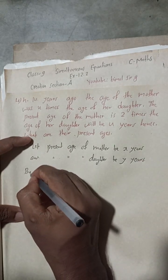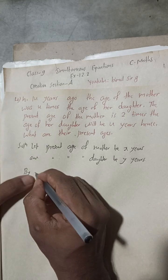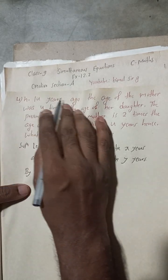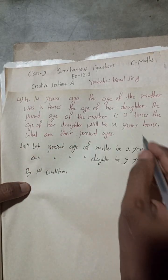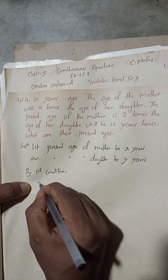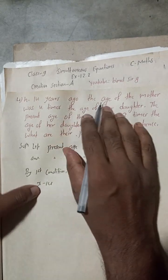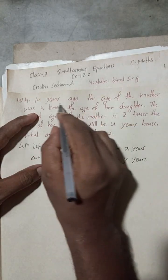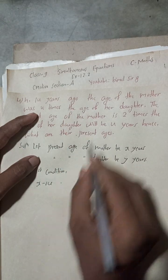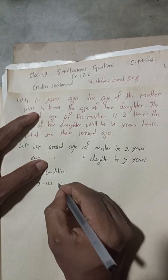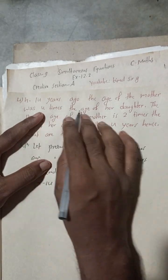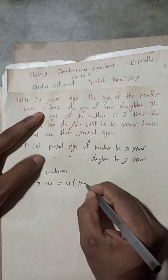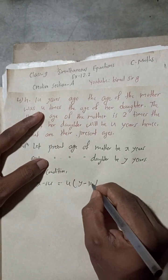By the first condition: fourteen years ago, the mother's age was X minus 14. The age of the mother was four times the age of the daughter, so four times the daughter's age fourteen years ago gives Y minus 14. So the equation is: X minus 14 = 4(Y minus 14). This is condition one.